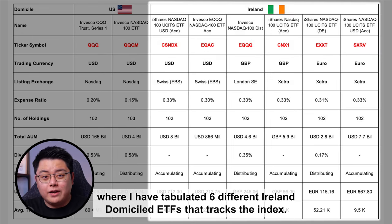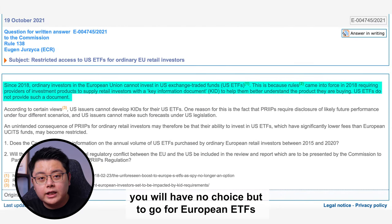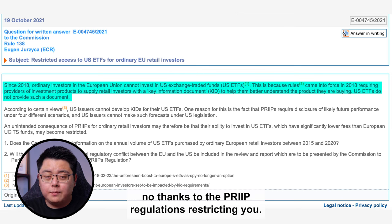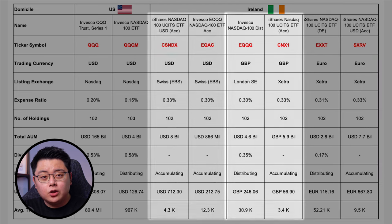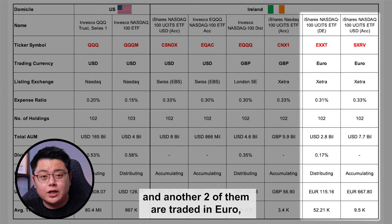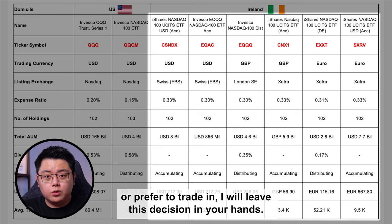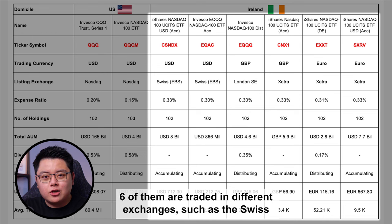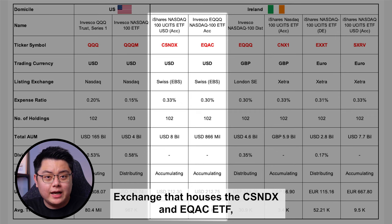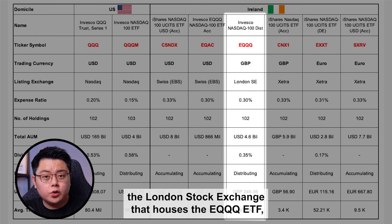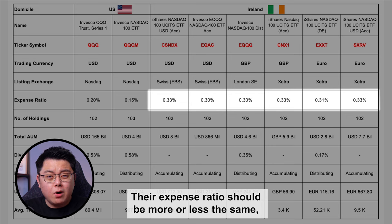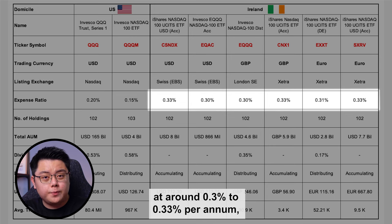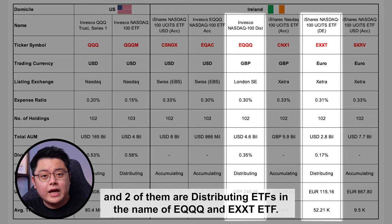Now let's look at the 6 Ireland domicile ETFs tracking the index. If you are from Europe, you have no choice but to use European ETFs due to PRIIP regulations restricting access to US ETFs. Among the 6 cherry-picked Ireland domicile ETFs: 2 are traded in USD, 2 in GBP, and 2 in EUR. They are listed on various exchanges — the Swiss Exchange houses CSNDX and EQAC, the London Stock Exchange houses EQQQ, and the Germany Xetra Exchange houses CNX1, EXXT, and SXRV. Their expense ratios are broadly similar at around 0.3% to 0.33% per annum, and EQQQ and EXXT are distributing ETFs.